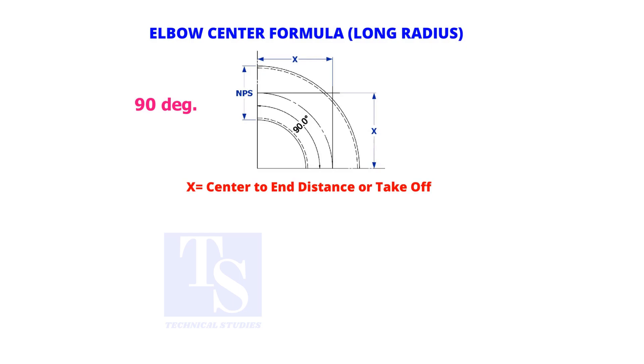Let us learn how to calculate the elbow center of a 90 degree long radius elbow. By multiplying the nominal pipe size with 38.1, you will get the center to end dimension, or the take-off, of the elbow.